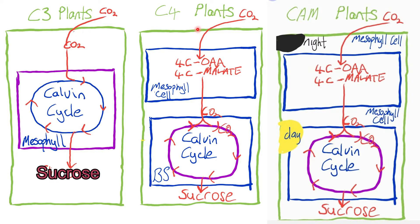Let us first look at the C3 and C4 pathway. What is common is the mesophyll cell. In C3 plants the Calvin cycle occurs within the mesophyll cells. In C4 plants there is something called spatial separation, so photosynthesis virtually occurs within two cells — the mesophyll cell and the bundle sheath cells. Part of the process occurs within the mesophyll cell and part occurs within the bundle sheath cells.